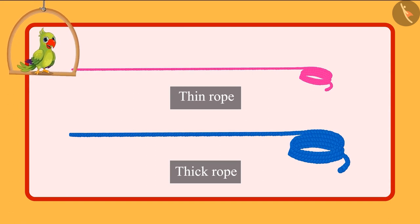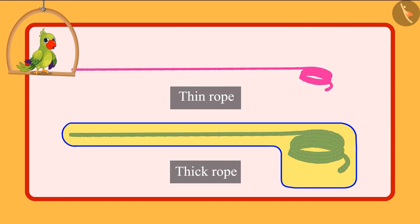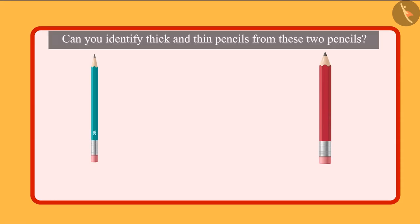Shoto and Pinky chose the thick rope instead of the thin rope to hang a swing. So children, can you identify thick and thin pencils from